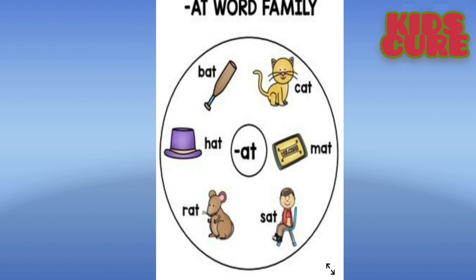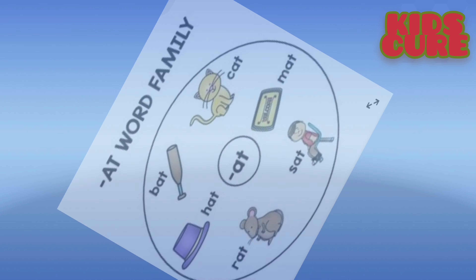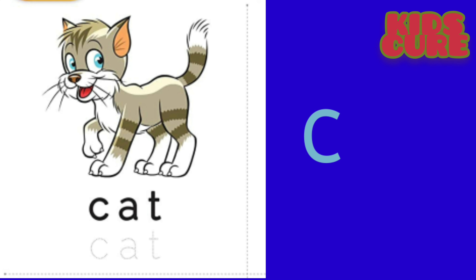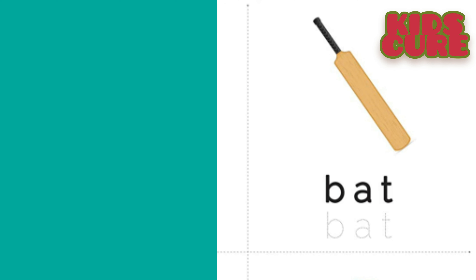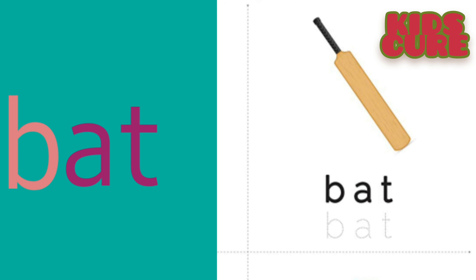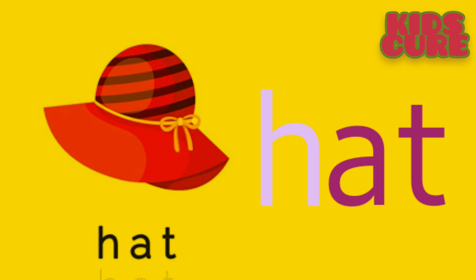Let's quickly revise. Cat. C, A, T. Cat. Bat. B, A, T. Bat. Hat. H, A, T. Hat.